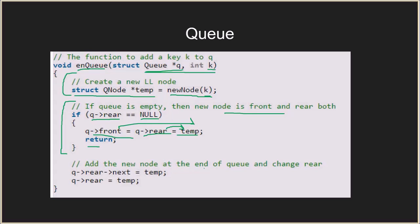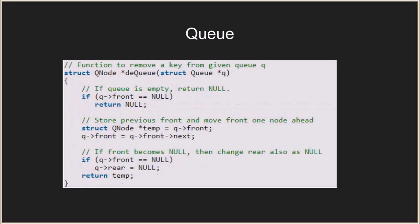If the queue is not empty, we add the new node at the end of the queue without changing the front. The next pointer of the current rear node points to temp, and then the rear is updated to temp. So we create the connection that next of the current rear equals temp, and then rear equals temp.